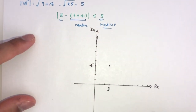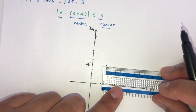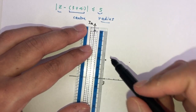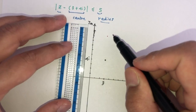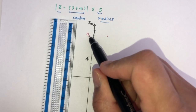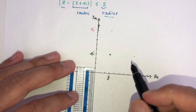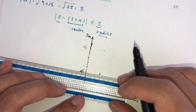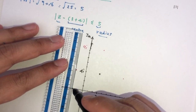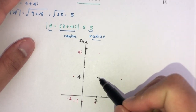With radius 5, count outward from the center in all directions. Key boundary points include: the top at 9i, the bottom at −i, and the leftmost point at −2 on the real axis. Use a compass to draw the full circle accurately.